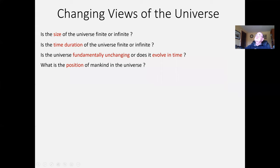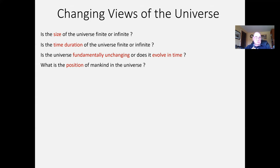I'd like to tell you about two of the most important discoveries of modern cosmology that really got cosmology started as a science. Those two discoveries were made by Edwin Hubble. We'll look at his work and the work that made his work possible, and we'll look at this through a historic point of view, running quickly up through various views of the universe leading up to the very radical new change that Hubble brought.